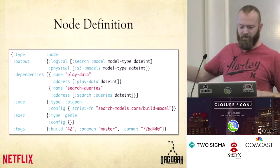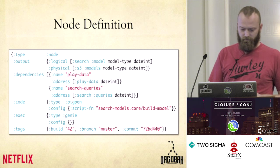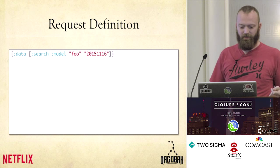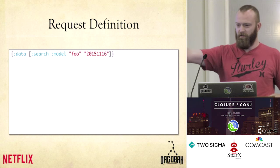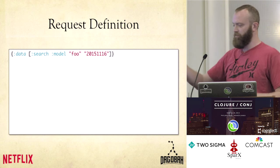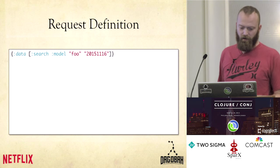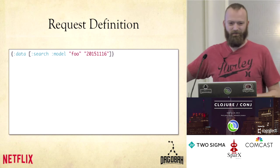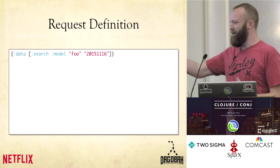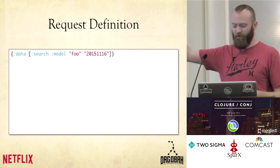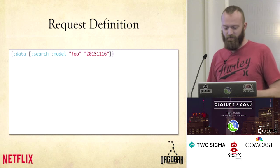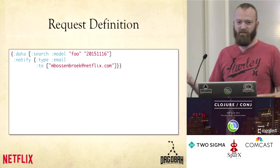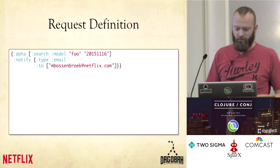So now I have this node in the system — what do I do with it? We issue a request. The requests are also in EDN. I give this blob of EDN to the API of the service and say go build me this — I want the data search model foo 2015-11-16. That's today. What this is going to do is find that path, line it up, and then say foo is my model type, that date's my date. You can also specify email me when it's done — it's a generally useful thing to know when something's done building.